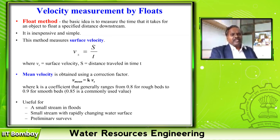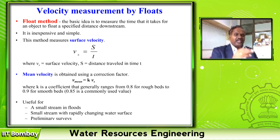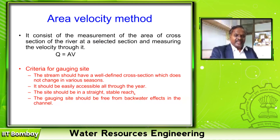Don't use a float current meter for very large streams — use it only for small streams with rapidly changing water surface and for preliminary surveys. To establish a good relationship between rainfall and discharge, accurate measurement of discharge is required, and that is why we have to do the area-velocity method.